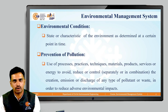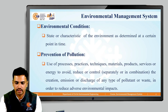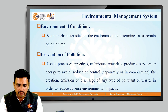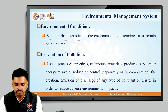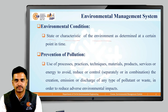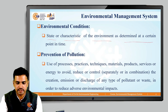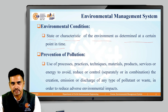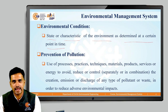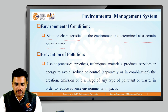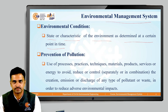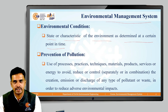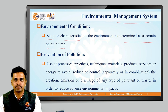The first definition of this lesson is environmental condition. It is defined as a state or a characteristic of the environment which is determined at a certain point of time. The environmental condition in which an organization operates can have a lot of effect on the environmental management system of the organization. Hence, it is necessary to understand what is the present environmental condition at that particular organization.